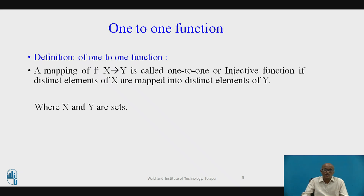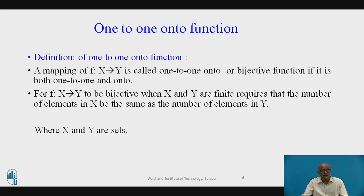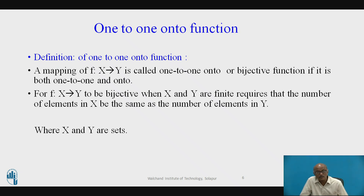A mapping from set X to set Y, denoted f, is called one-to-one onto or bijective if it is both one-to-one and onto. To be bijective, the function must satisfy both conditions. Furthermore, when X and Y are finite sets, being bijective requires that the number of elements in X be the same as the number of elements in Y.